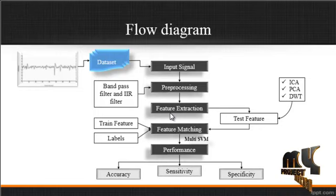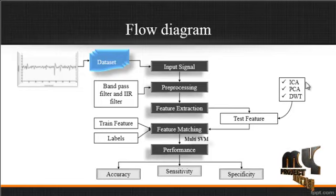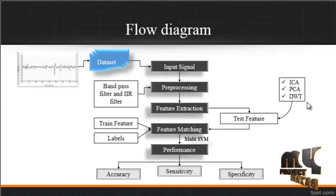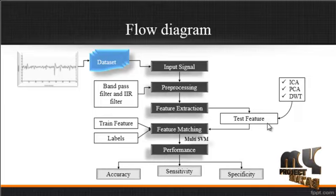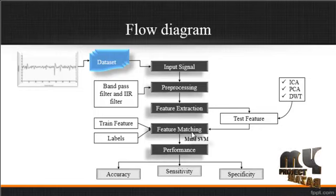After extracting the required signal, feature extraction is carried out. In this step, test features are generated using three algorithms: ICA, PCA, and DWT. Using these three algorithms, the test features are extracted from the signal.